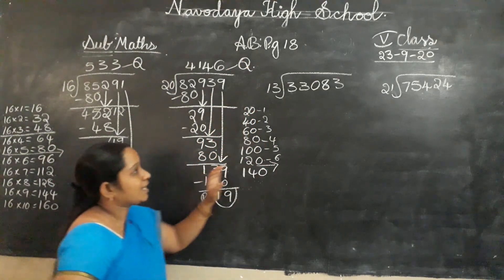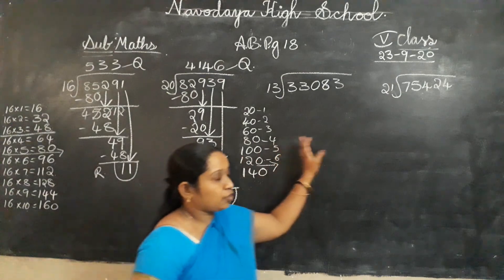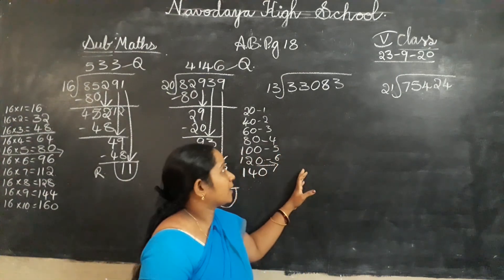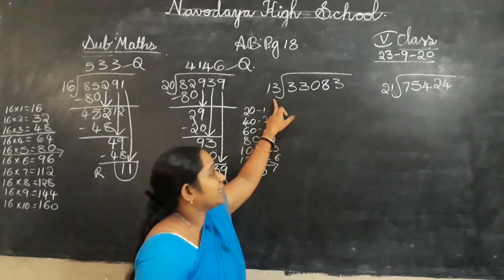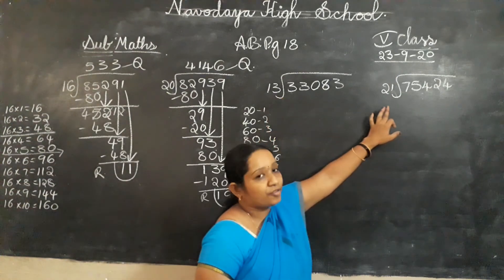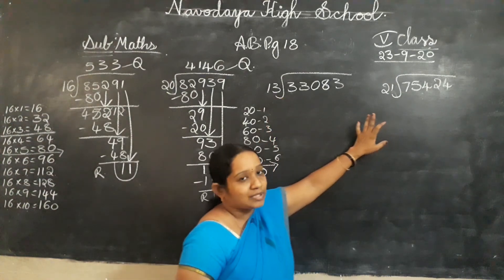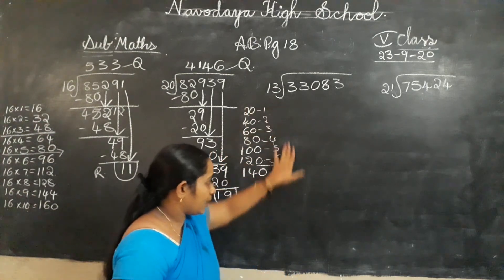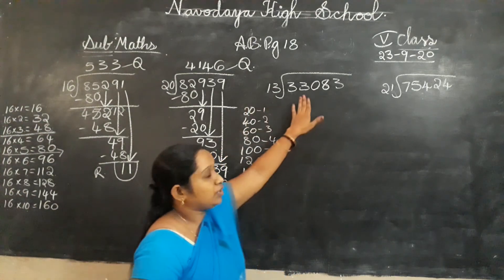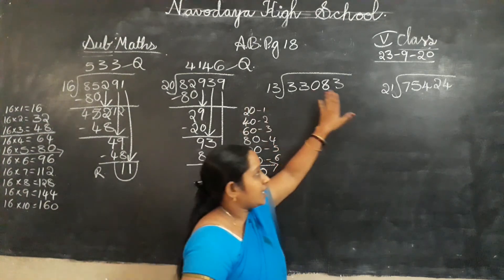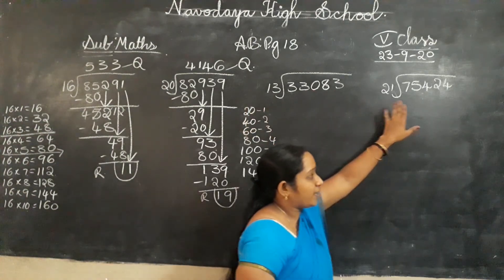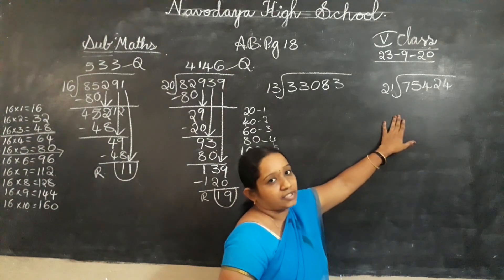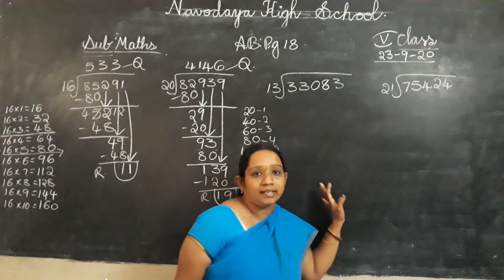Ok children. The remaining 2 problems you will do as homework — using the 13 times table and the 21 times table. Write the 13 table and do the division. Here also write the 21 table and do the division.